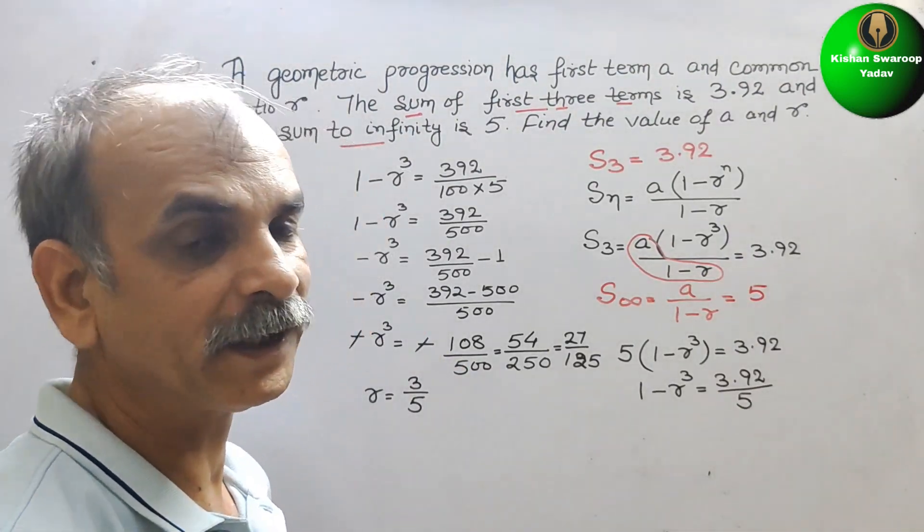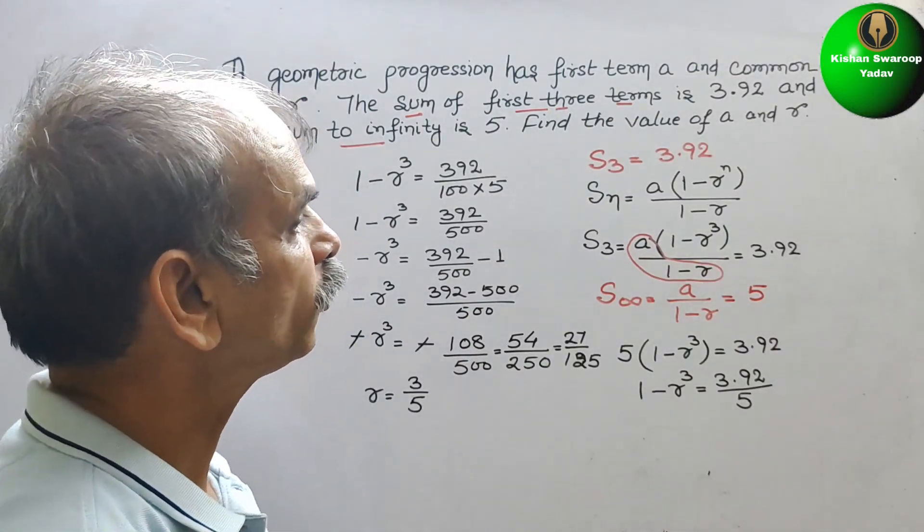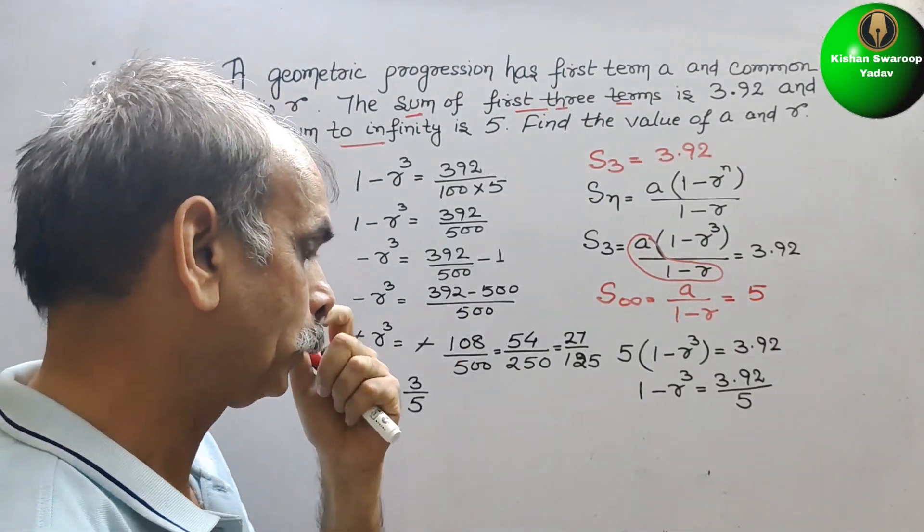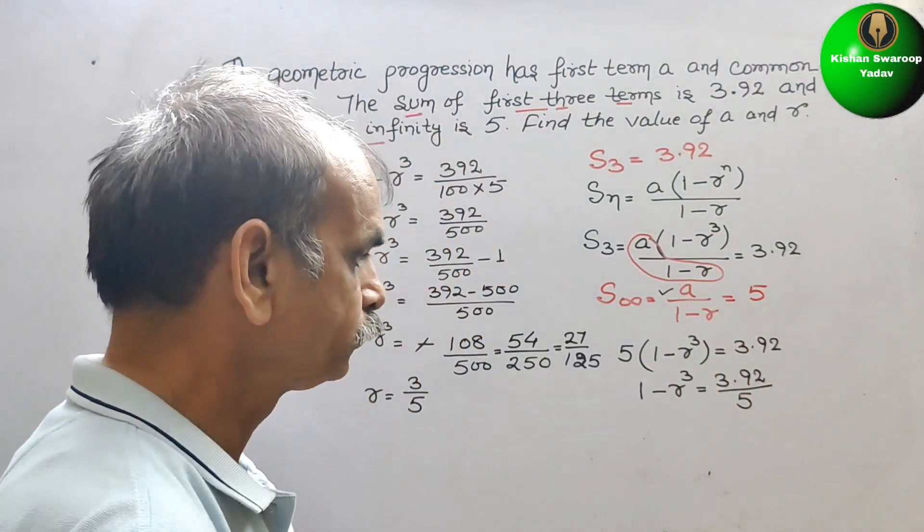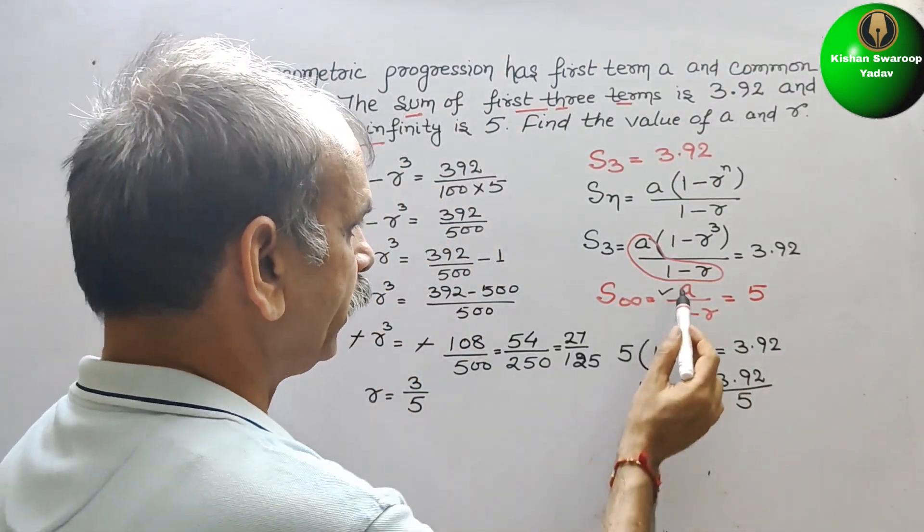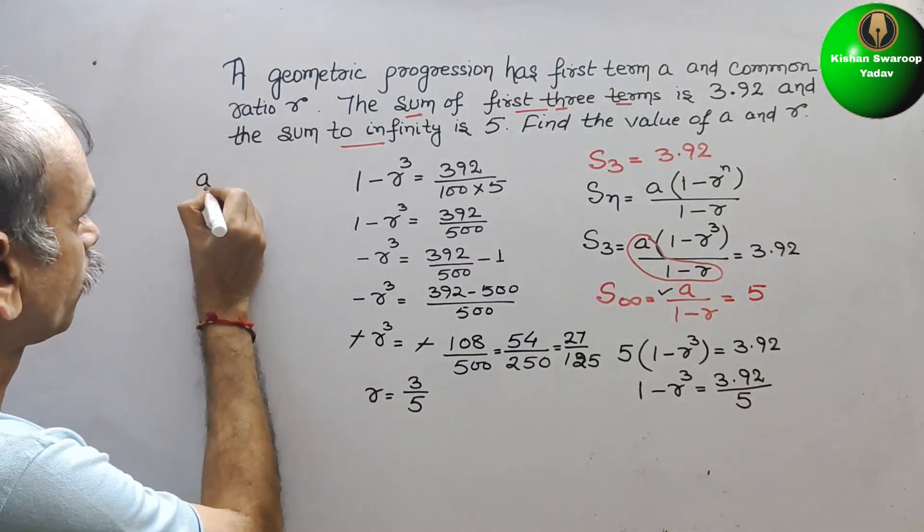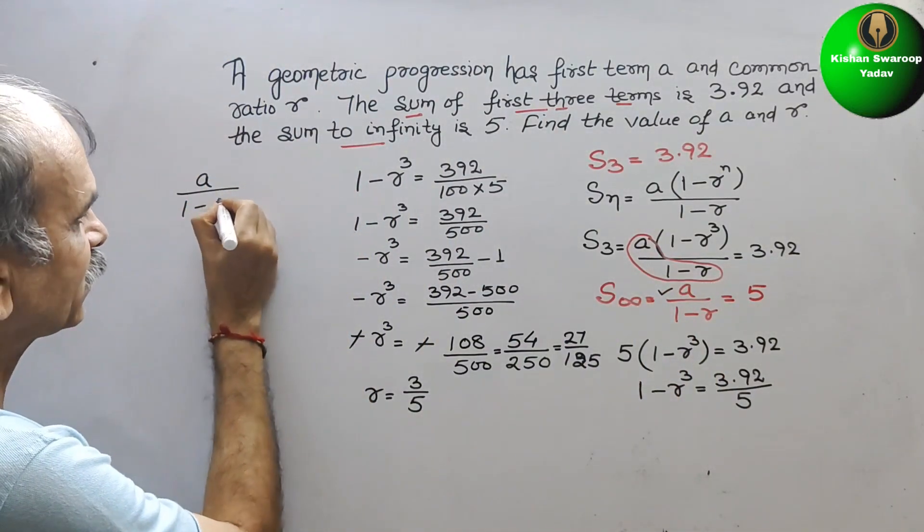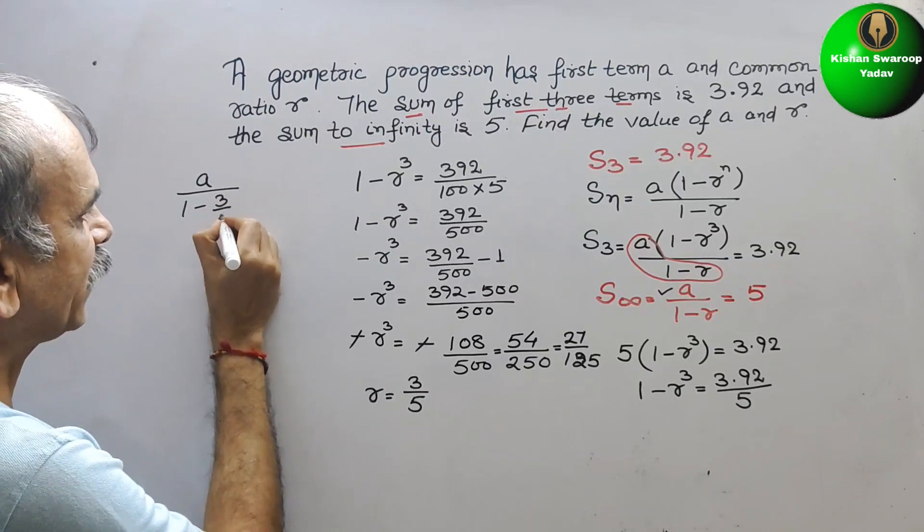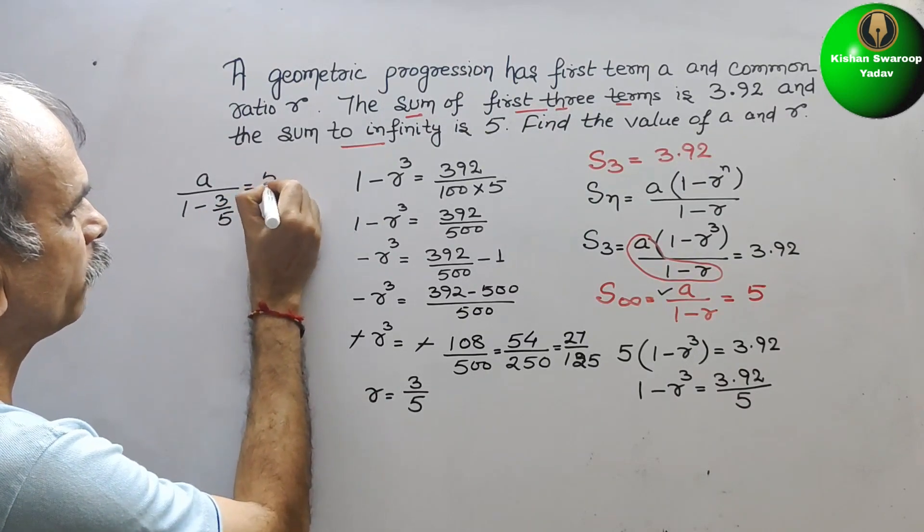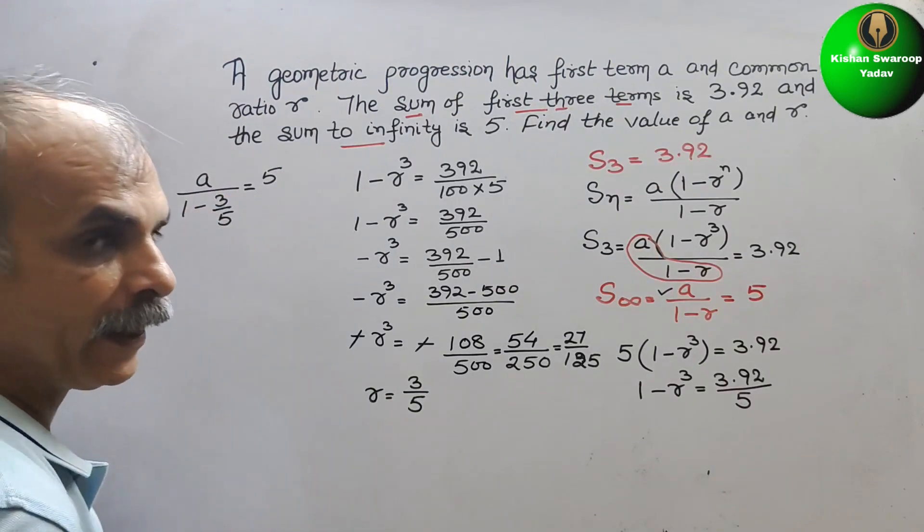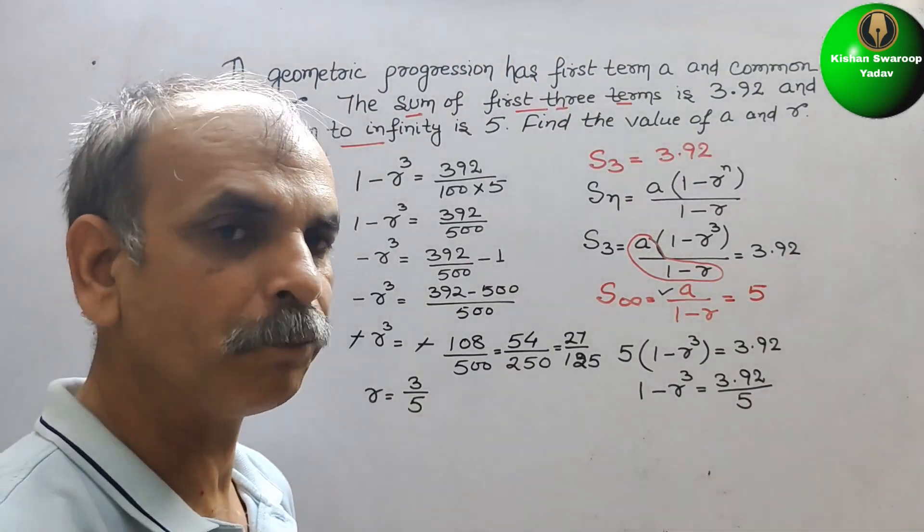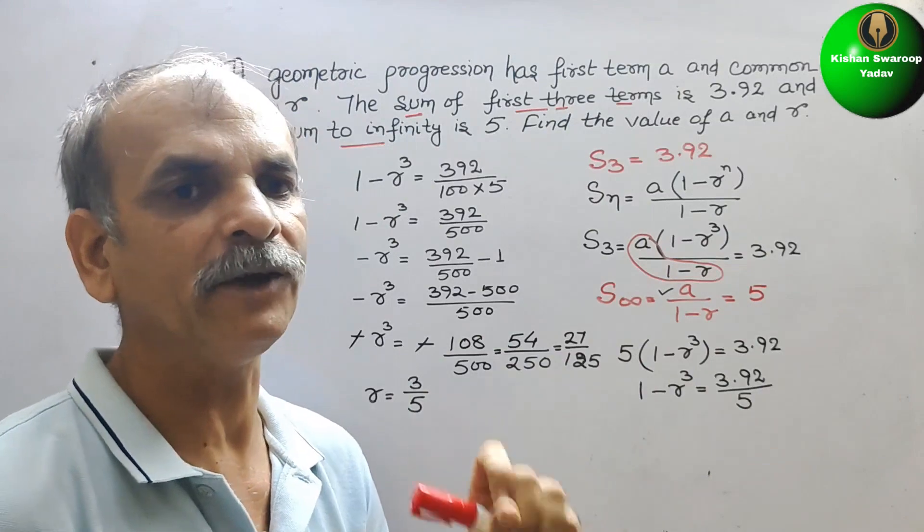Now we have to find A. How we will find it out? We will put here. A by 1 minus 3 by 5, that is R, is equal to 5. Take the LCM. And here A is there. We will write it in P by Q form. That means A by 1.